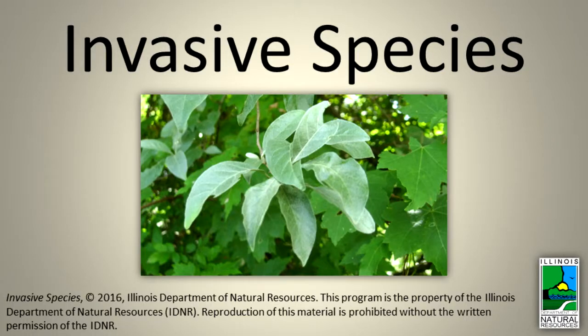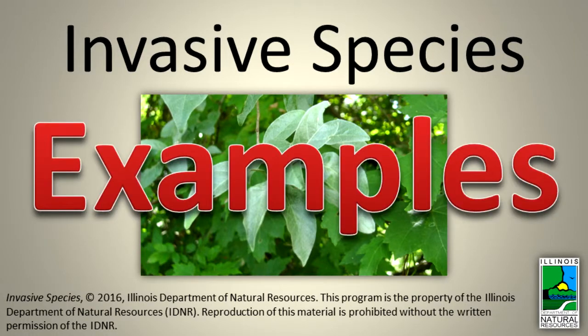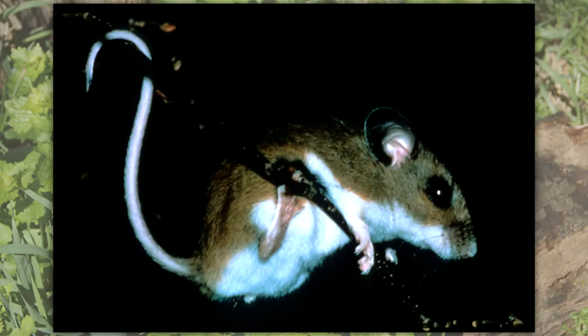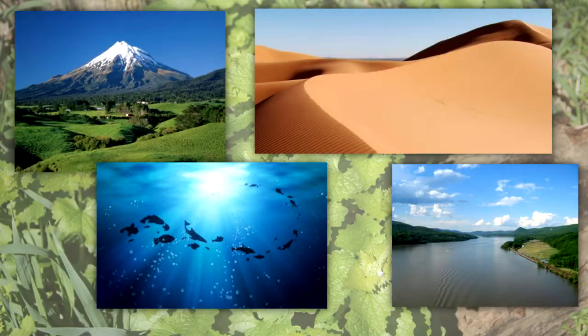Invasive species. Organisms tend to live in one general area on Earth. They may find it hard to spread to new places because of their size or because of barriers like mountains, oceans, deserts, and rivers.